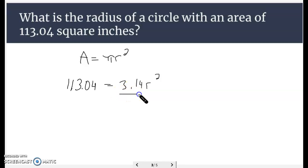So solving this equation, the first thing we're going to do is divide both sides by 3.14. 113.04 divided by 3.14 gives us 36. So looking at this, the radius squared equals 36. You've got to ask yourself, what number squared gives you 36? Well, that number would be 6. 6 times 6 is 36.